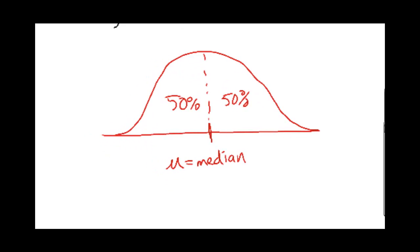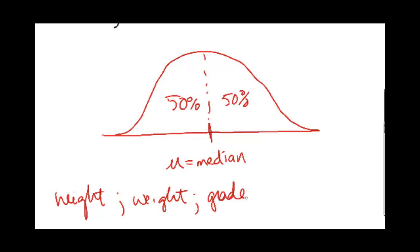This applies to everything from height — there are going to be some people that are tall, some people that are short, and most people are right in the middle. Same with grades, or whatever you can think of that is looked at on a large scale. There are few people getting a perfect score, a few people doing very poorly — somebody forgot there was an exam that day — but most people are right in the middle.